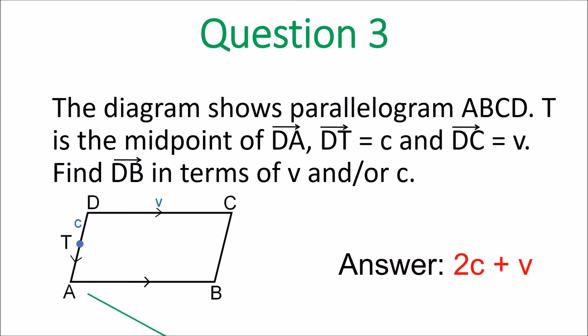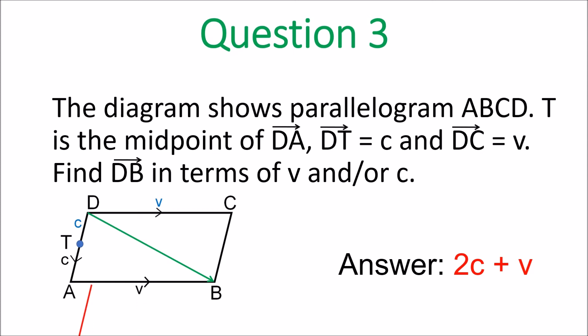Question 3. Let's put in vector DB, and let's put in DT which is c, and let's put in AB which is v. Then we go from tail to head — that's 2c, and that's v, so the answer is 2c plus v.